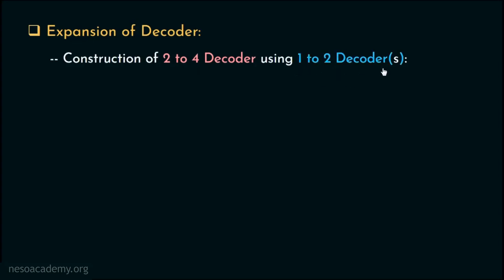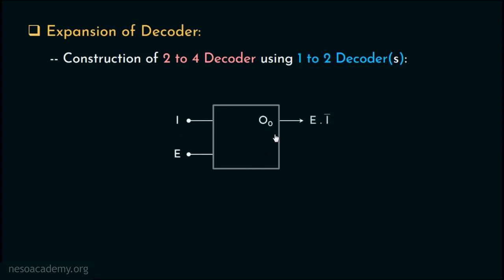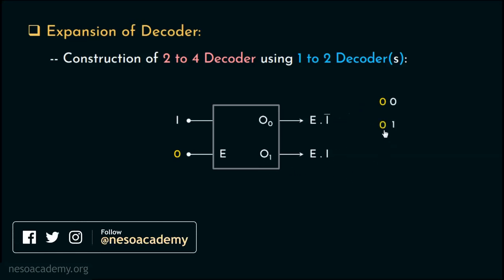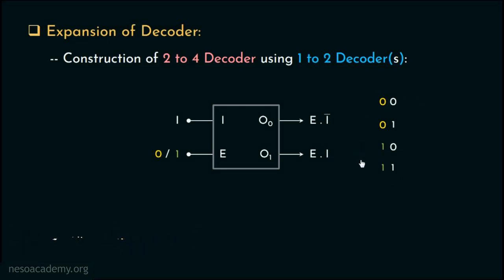Let's take a closer look at a 1-to-2 decoder. In this, we have one input line and one enable line, giving us output line O0 which is E·Ī, and output line O1 which is E·I. Logically, when we feed 0 through E, O0 will be activated for the sequence 00 and O1 for the sequence 01. On the contrary, if we feed 1 through E, O0 will be activated for the sequence 10 and O1 for the sequence 11. Based on what is propagated through the enable line, we can figure out the proper input sequences needed to activate the desired output line.